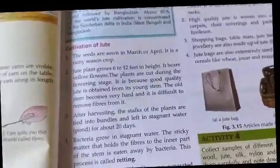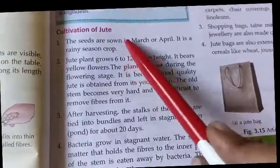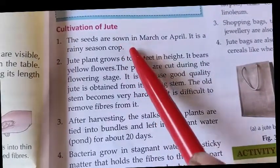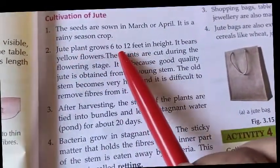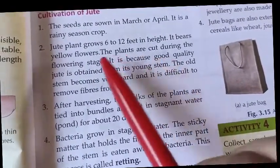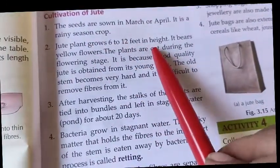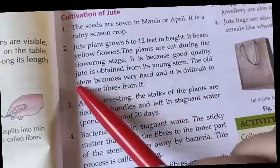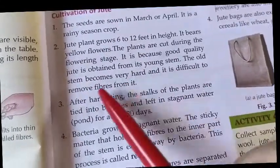Regarding cultivation of jute: seeds are sown in March or April, as it is a rainy season crop. Jute plants grow six to twelve feet in height and bear yellow flowers — which may be why it is called the golden fiber. The plants are cut during the flowering stage because good quality jute is obtained from the young stem. Once the stem becomes hard or mature, it is difficult to remove the fiber.